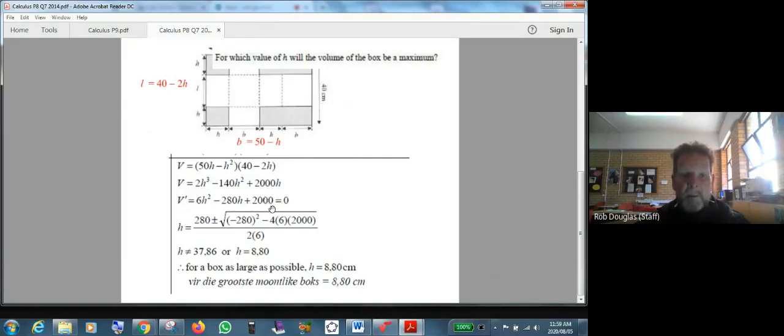Now in this government memo, they took these numbers and put them in the quadratic formula. Might be a little smarter to put 3 and 140 and a thousand in, but you'll get this exact same answer. So b is negative 280, a is 6, c is 2000. They put it in the quadratic formula and they get two different answers out. They get 37.86 and 8.88 for the height. Well, if you put 37.86 back in here where it says 40 minus 2h, you're going to get a negative answer. It just doesn't make any sense, it won't work.